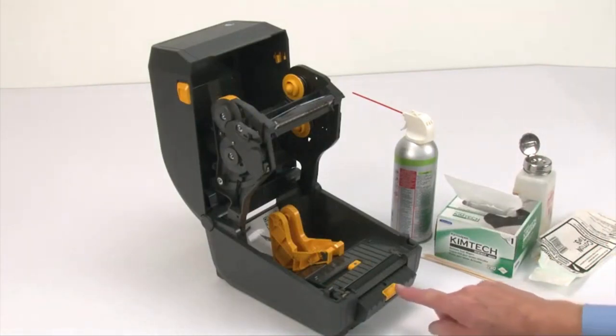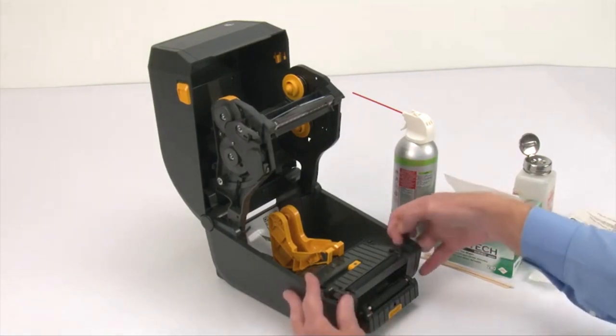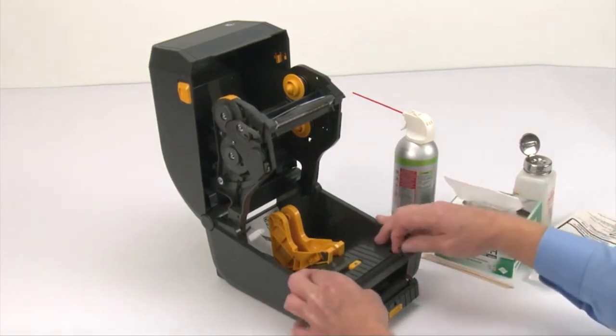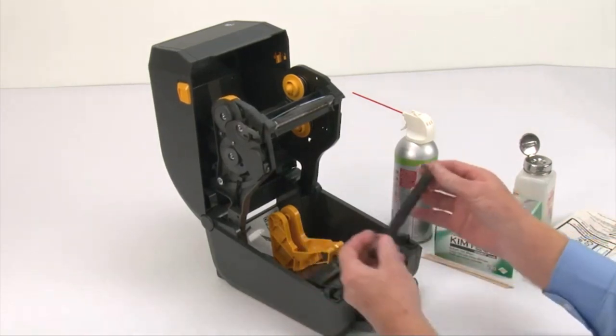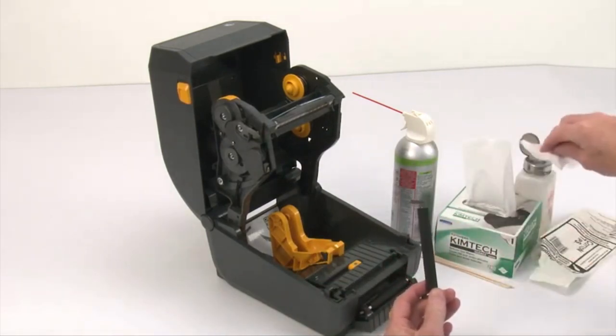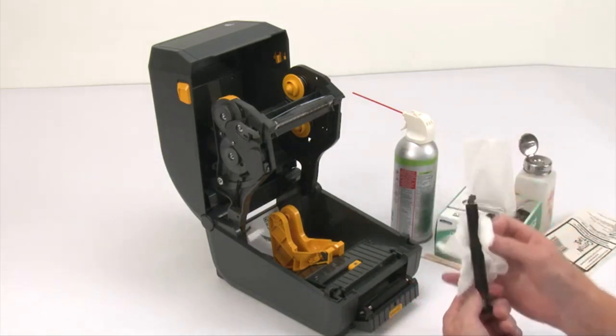If your printer has the dispenser option, open the door. To remove the platen, release the two retainers and rotate up. Use the retainers to lift the platen. Moisten a lint-free wipe with isopropyl alcohol. Clean the platen while turning and moving from end to end.